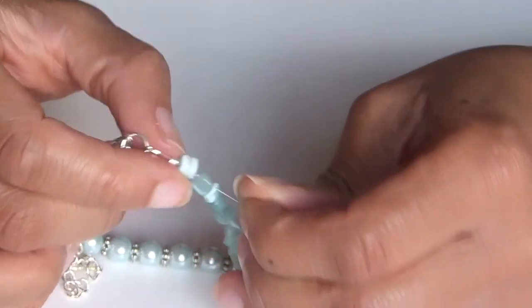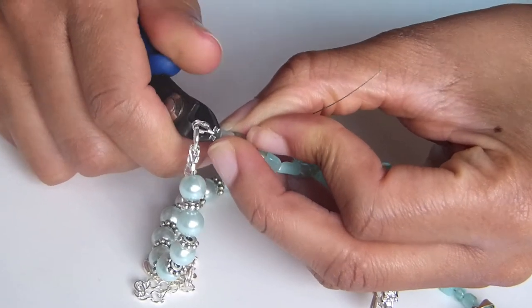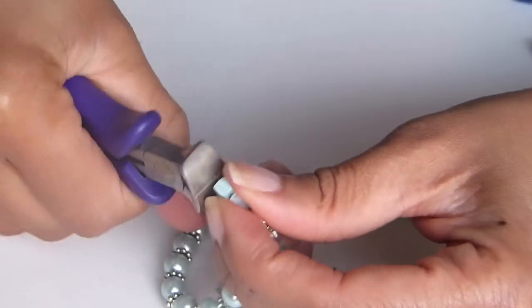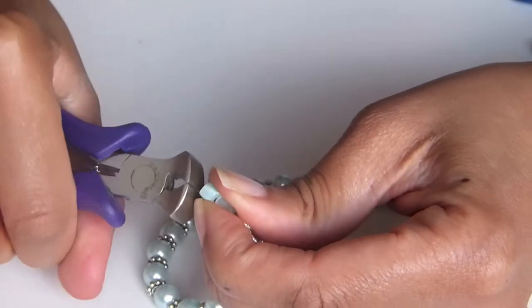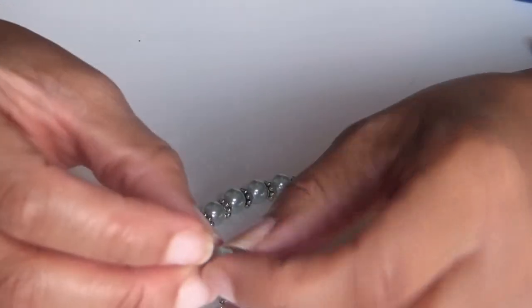Once you have that, the excess that you're pulling on right there will be removed. You're going to cut that after you crimp the bead. So you're going to crimp and close the crimp bead at this point and remove that excess wire as I said. Once you do that, you want to slip that little piece of wire into the bead so it does not show.